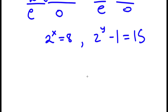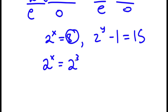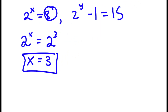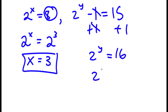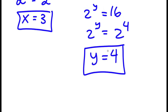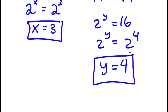Solving 2 to the power of x equals 8: since 8 equals 2 to the power of 3, we get x equals 3. For 2 to the power of y minus 1 equals 15, add 1 to both sides to get 2 to the power of y equals 16. Since 16 equals 2 to the power of 4, y equals 4. So x equals 3 and y equals 4.